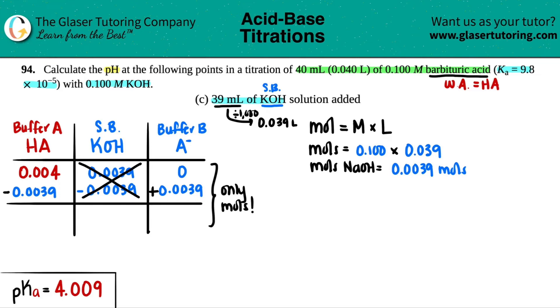Let's see how much acid is remaining: 0.004 minus 0.0039. So basically, if I had to write it in here, it would be 1 times 10 to the negative fourth moles of the acid remaining. And then for the base, it would be 0.0039.